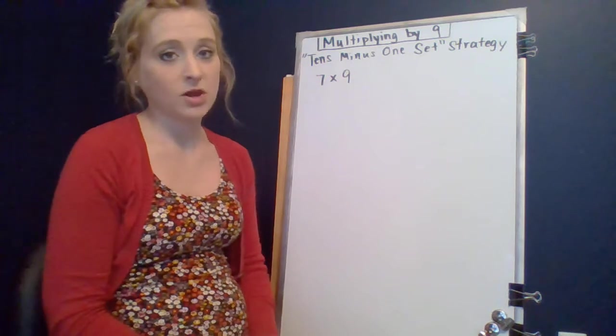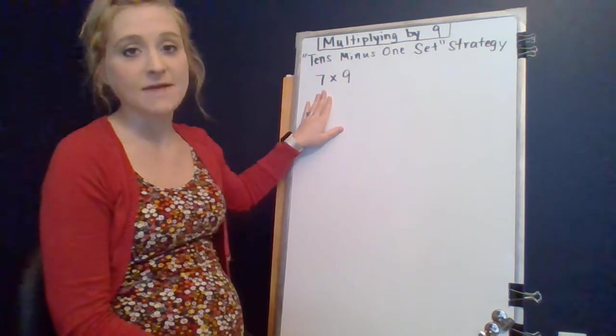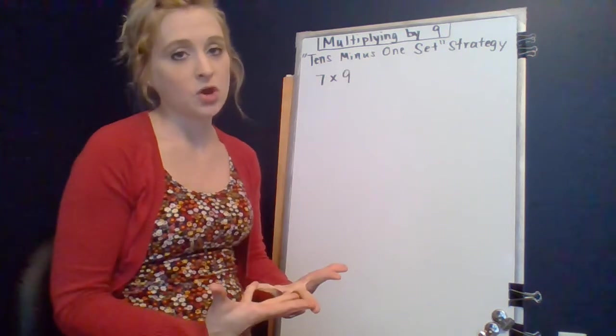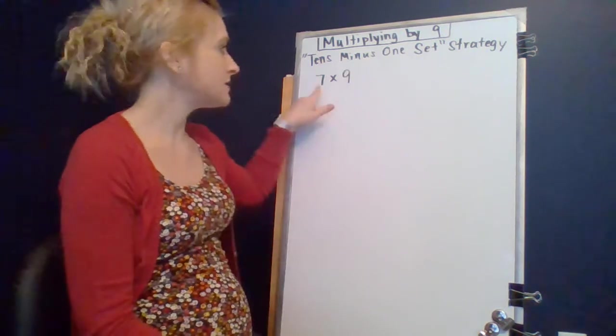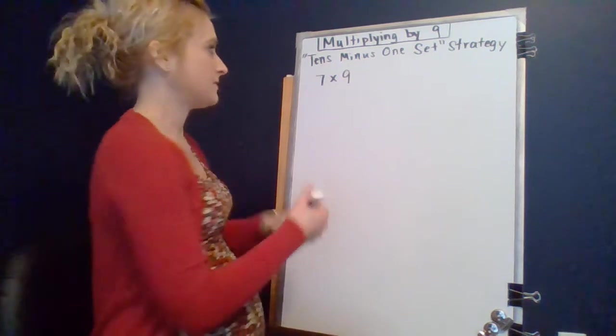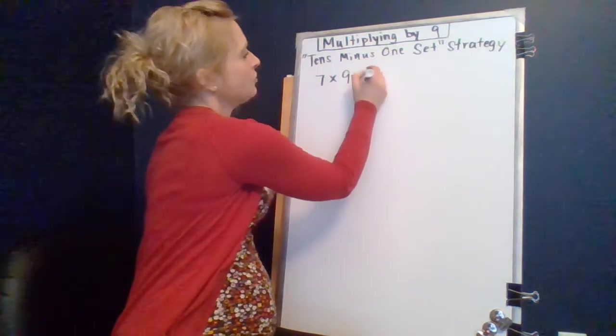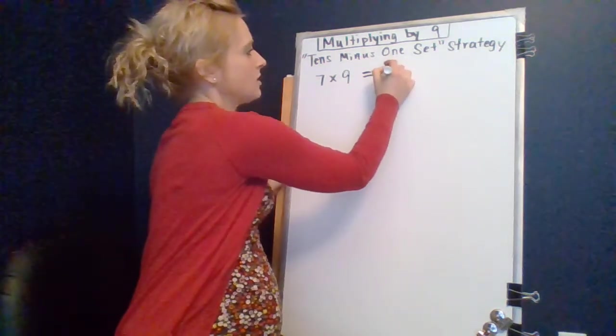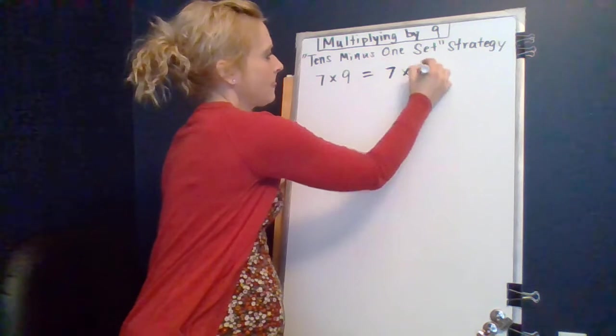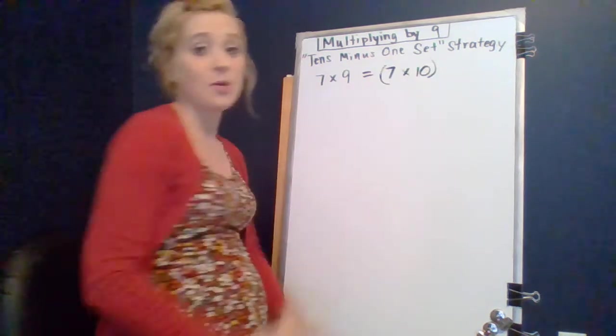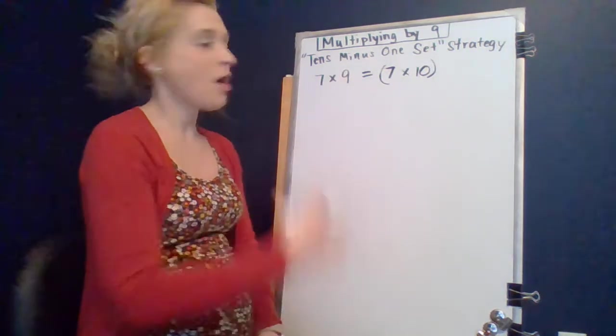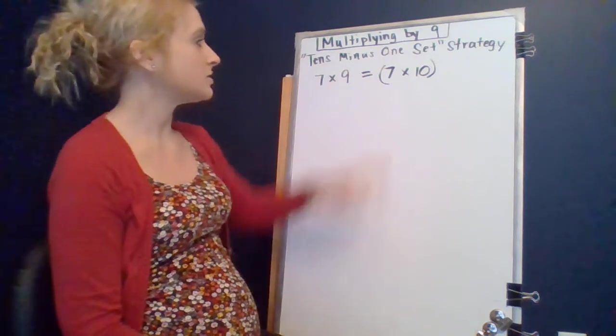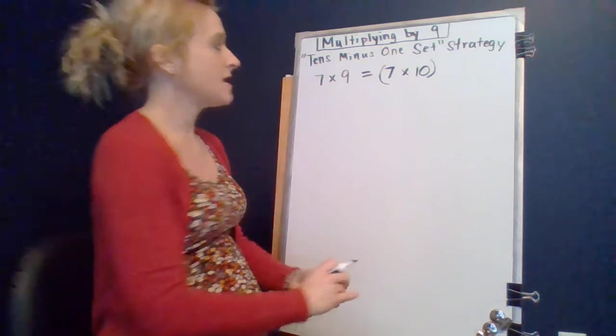So basically what we're going to be thinking about if we're multiplying seven times nine is that we're going to be thinking about nine as the number of groups. Instead of nine groups of seven, we're going to multiply by ten groups of seven. So numerically and in expression form, it's going to look like seven times ten first. We always put parentheses around what we are thinking first to follow the order of operations. Seven times ten is seventy.